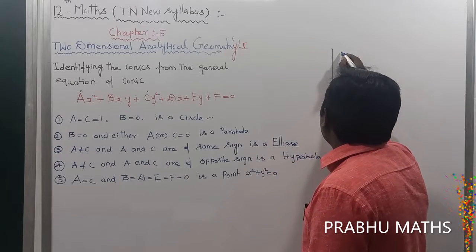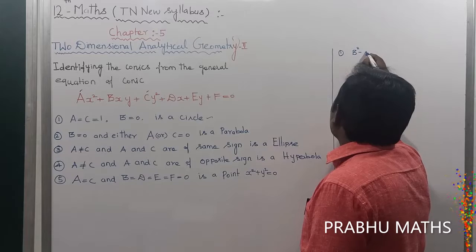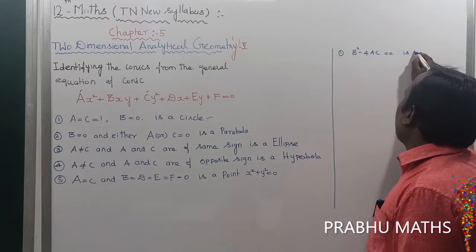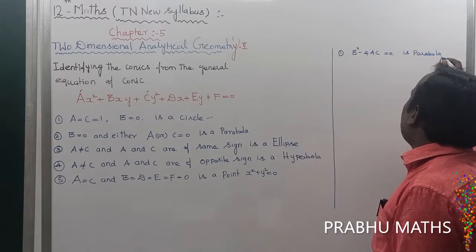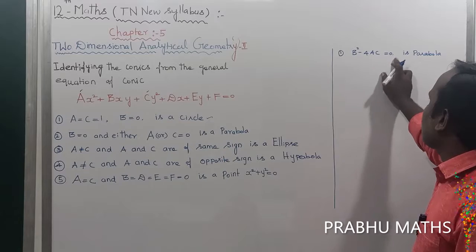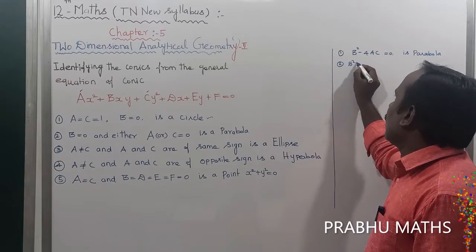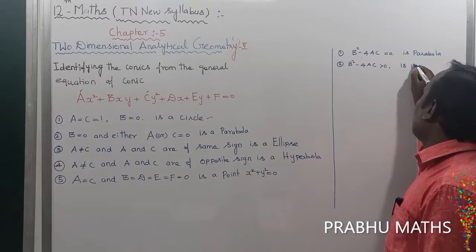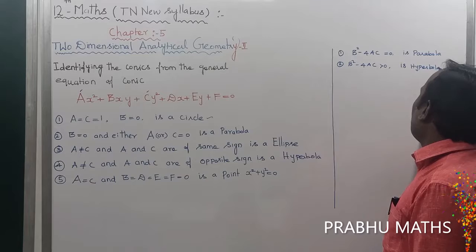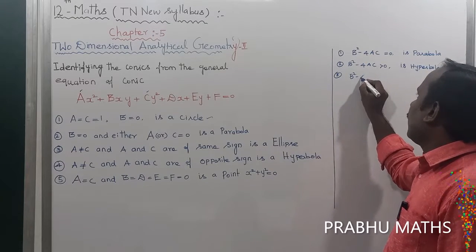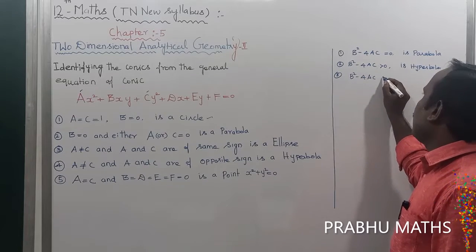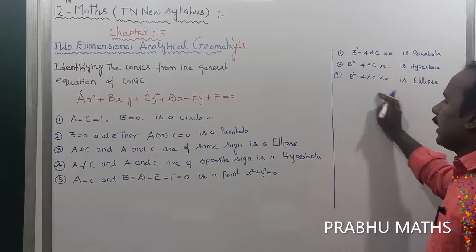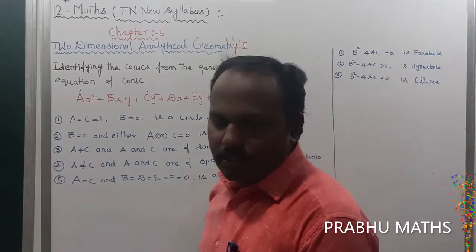Now consider the discriminant method using b² - 4ac. If b² - 4ac equals 0, the conic is a parabola. If b² - 4ac is greater than 0, the conic is a hyperbola. If b² - 4ac is less than 0, the conic is an ellipse.